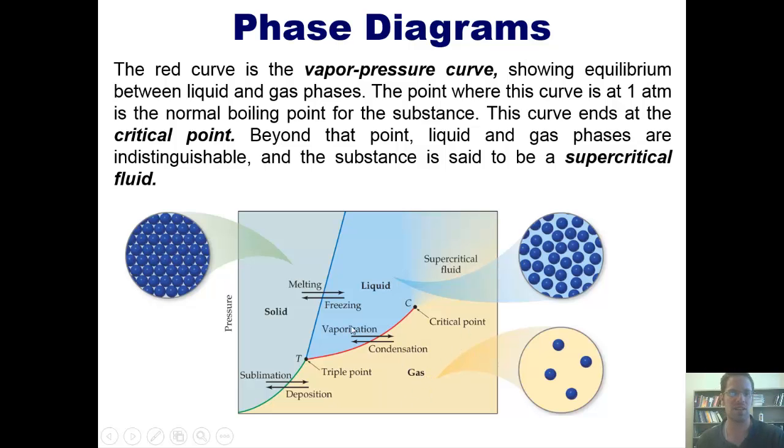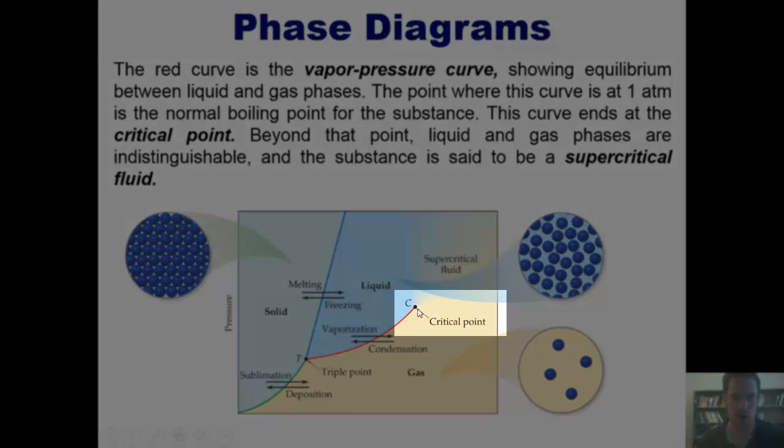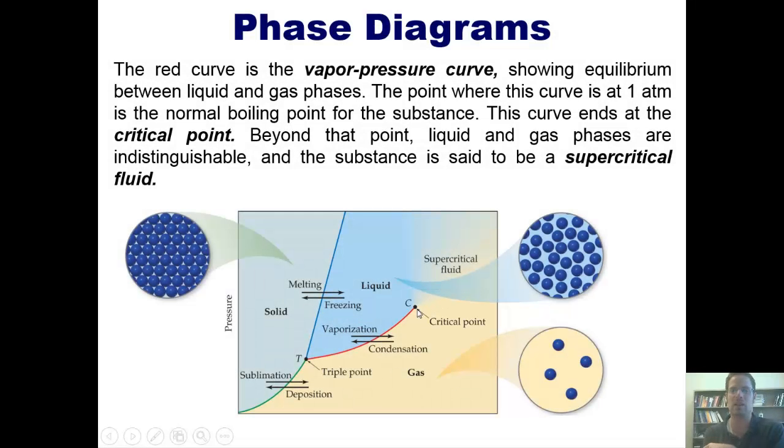The point at which this curve is at one atmosphere is the normal boiling point for the substance. The curve ends at this critical point, which you can see right here. Beyond the critical point, the liquid and gas phases are indistinguishable and the substance is said to be a supercritical fluid.